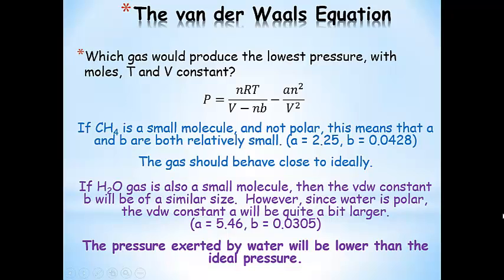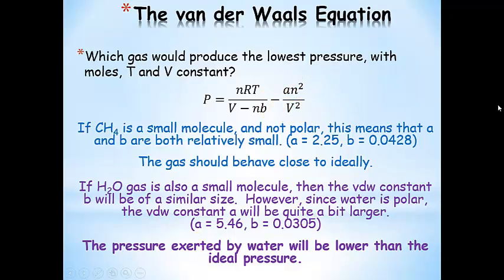We can see that water's attractions are quite a bit stronger. With the same number of moles and same volume, the subtracted pressure component is going to be larger for water than for methane. That means the pressure exerted by water will be lower than the ideal pressure — methane gives a close-to-ideal answer, while water has a significantly lower pressure than we would predict.